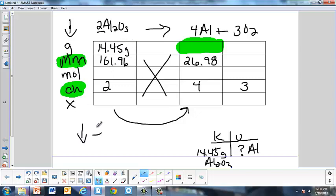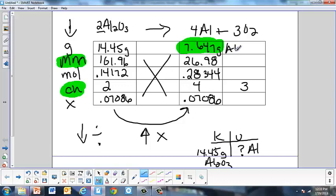So I'm going to take 14.45. Remember, going down the chart I divide, up the chart I multiply. So 14.45 divided by 101.96 is going to be .14172. Take that number, divide it by 2, because remember these are my conversion factors. I'm going to get .07086. We carry this over here, at least 4 sig figs, .07086. I multiply it by 4, because when I go back up the chart I multiply. I'm going to get .28344. Then I'm going to take that number. Remember, the safer way to get the right answer is to just leave it on your calculator, but you don't necessarily have to do it that way. Take .28344 times 26.98, I get 7.647 grams of aluminum.